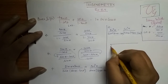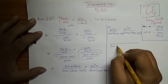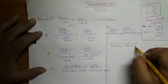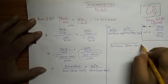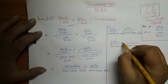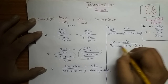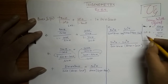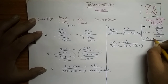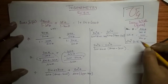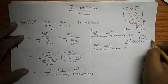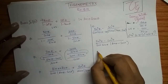We take LCM, which is cos θ times sin θ times sin θ minus cos θ. The numerator becomes sin cubed θ minus cos cubed θ. This is nothing but a cube minus b cube. And we know that a cube minus b cube equals a minus b times a squared plus a b plus b squared.